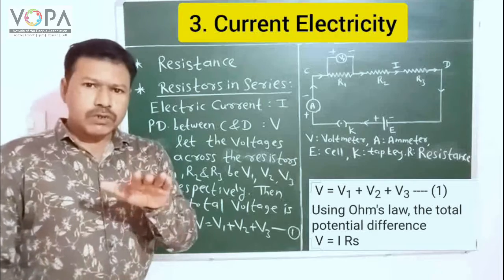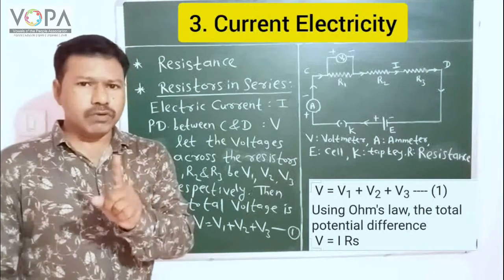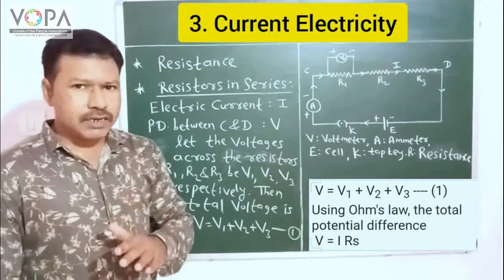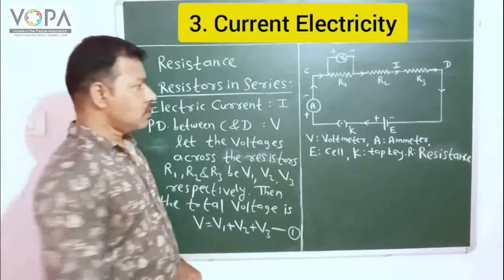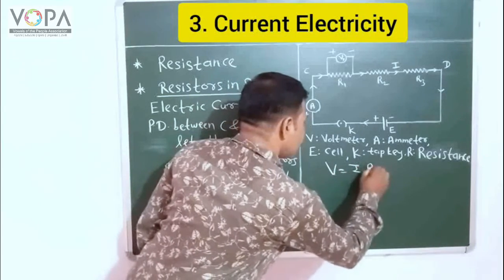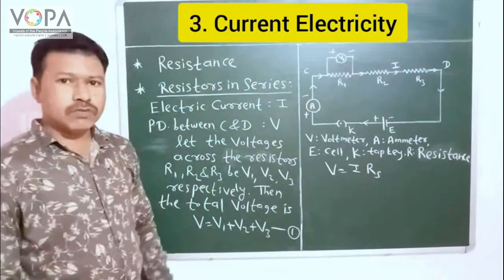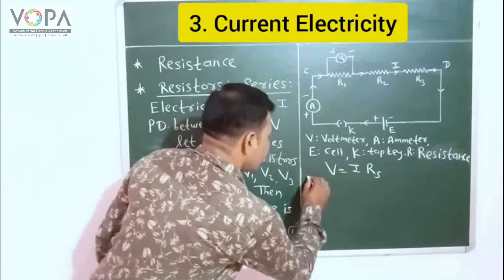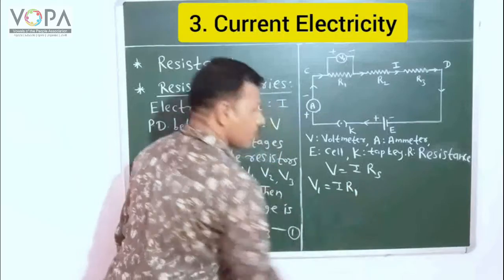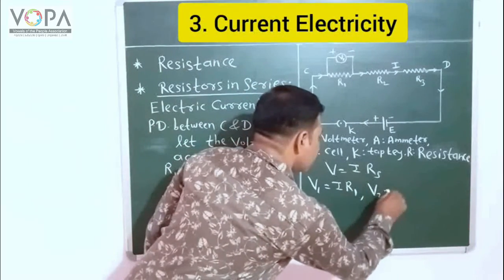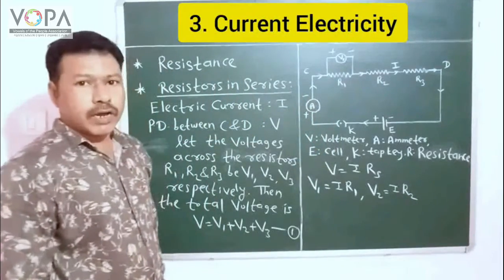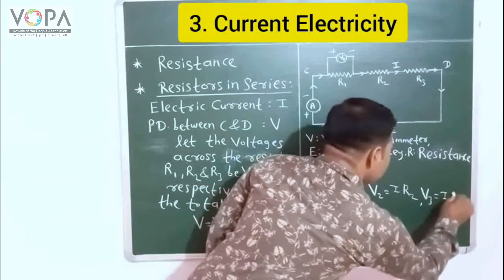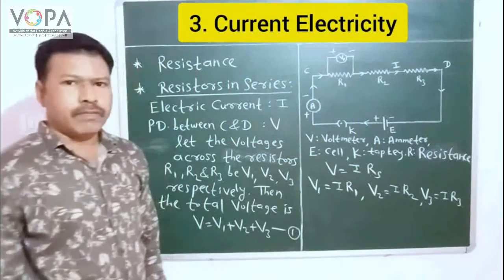Now we know the Ohm's law equation is V = R × I. If RS is the effective resistance across the points C and D, then we can write this as V = I × RS. Also, we can write the equations for V1, V2, and V3: V1 = I × R1, V2 = I × R2, and V3 = I × R3.